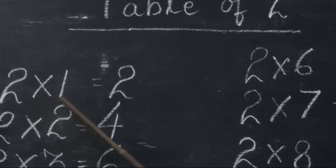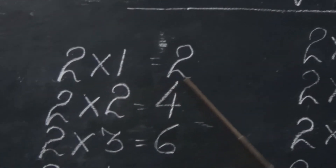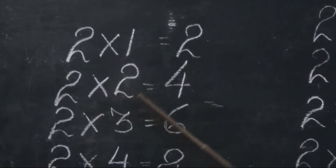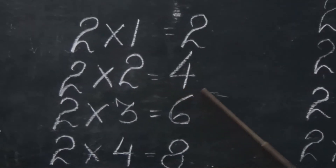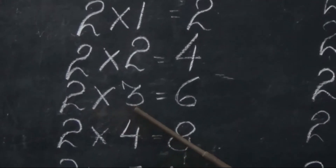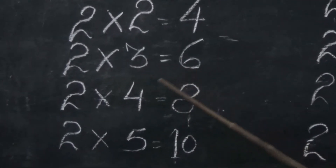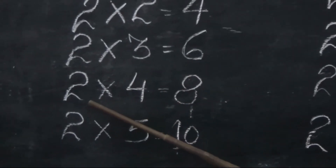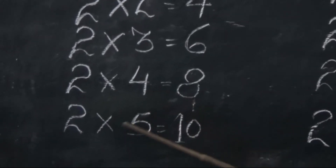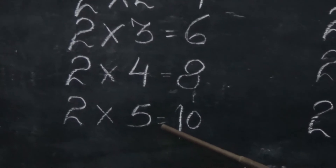Two, one, zah, two. Two, two, zah, four. Two, three, zah, six. Two, four, zah, eight. Two, five, zah, ten.